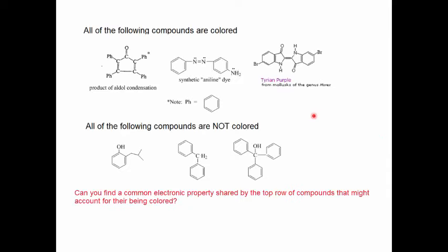Let's begin by examining these three compounds. These three compounds share one thing in common: they are all colored. Contrast this with the compounds at the bottom. All of these compounds are not colored. Why the difference? Can you find a common electronic property shared by the three colored compounds that the three non-colored compounds lack?